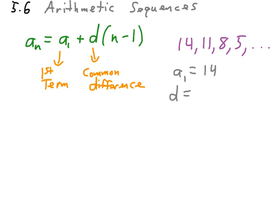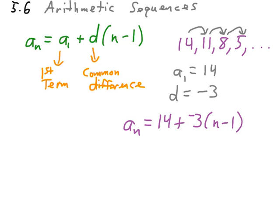Our d, our common difference, is how do we move between terms of the sequence. To move from 14 to 11, 11 to 8, or 8 to 5, we are adding a negative 3. So, taking these pieces and placing them into the sequence itself, we end up with a sub n equals a sub 1, which is 14, plus our common difference, negative 3 times n minus 1. And this is the formula itself.